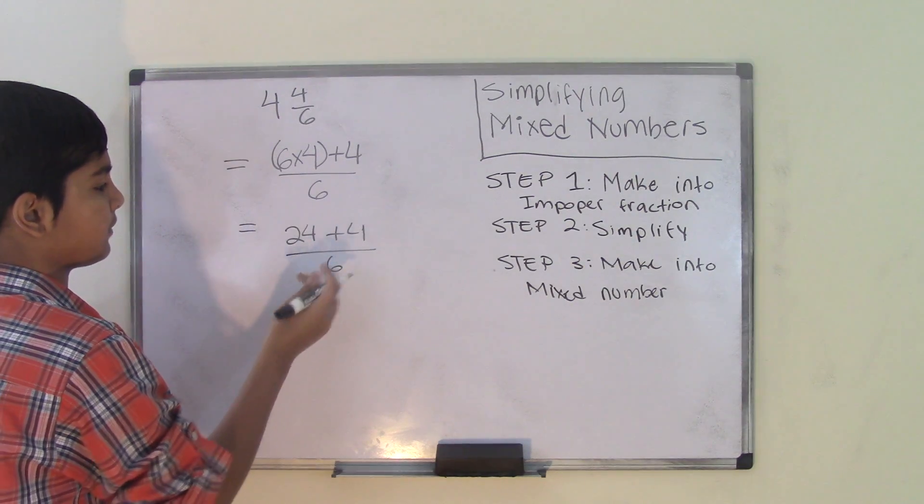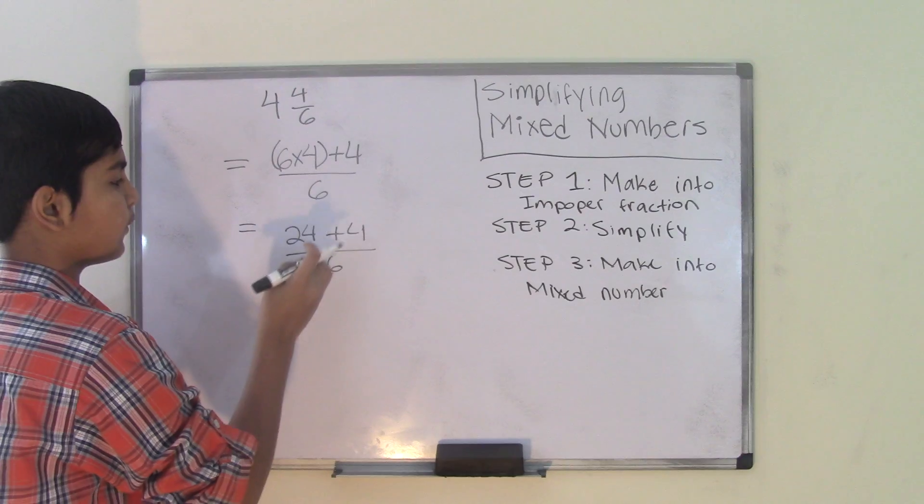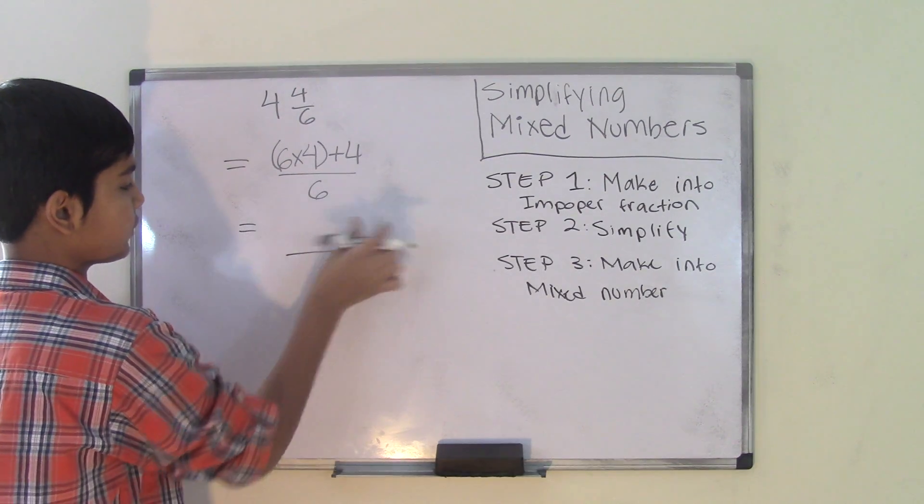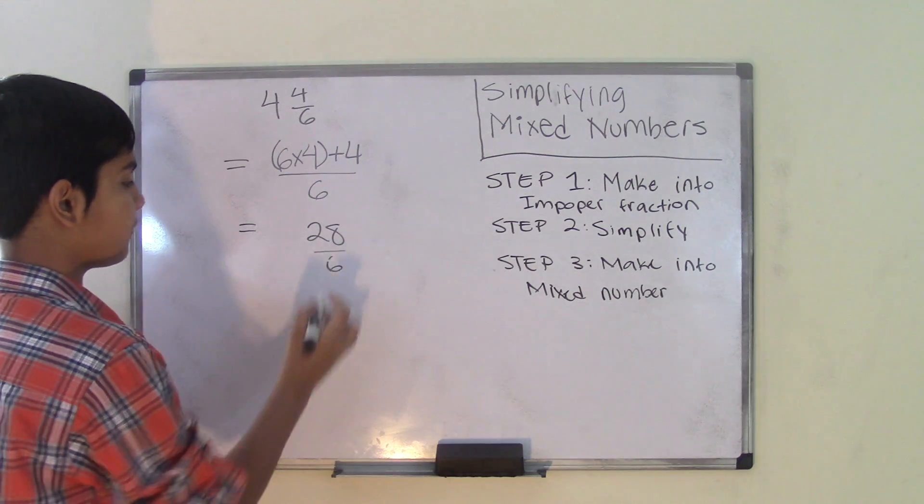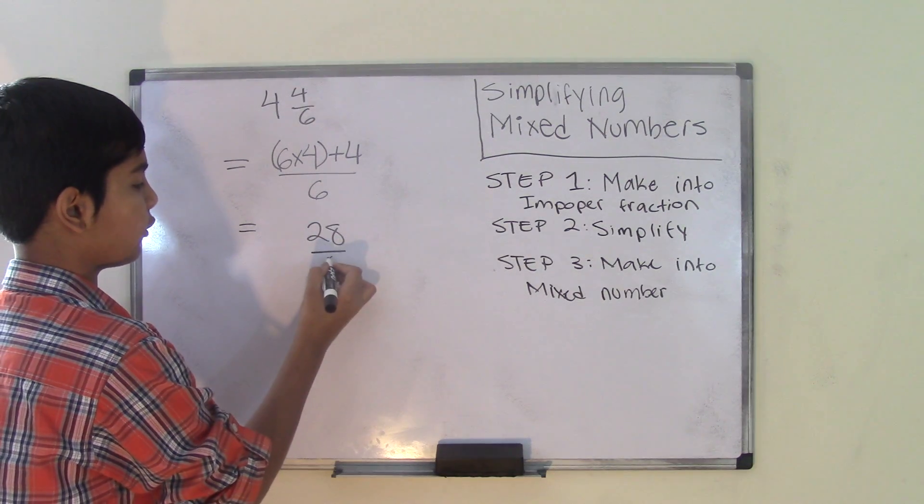And then if we simplify this even further, we already know that 24 plus 4 is equal to 28. So we get our improper fraction, which is 28 over 6.